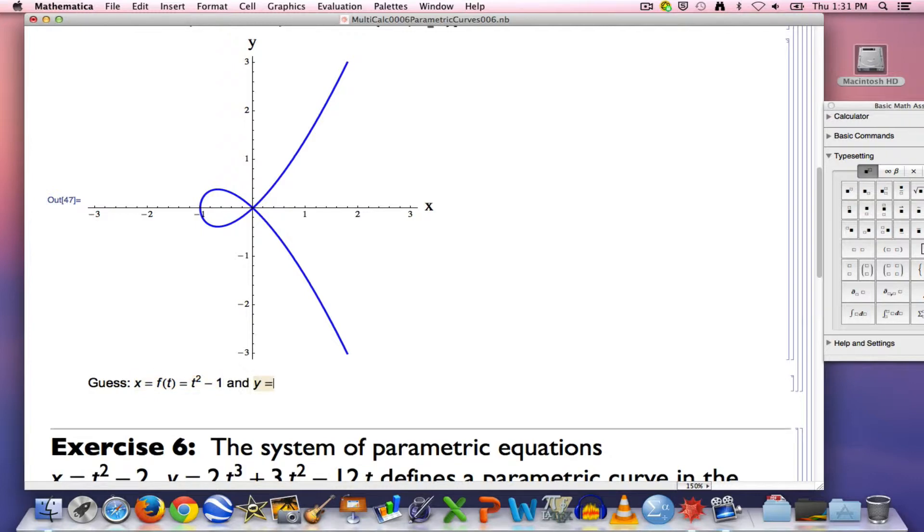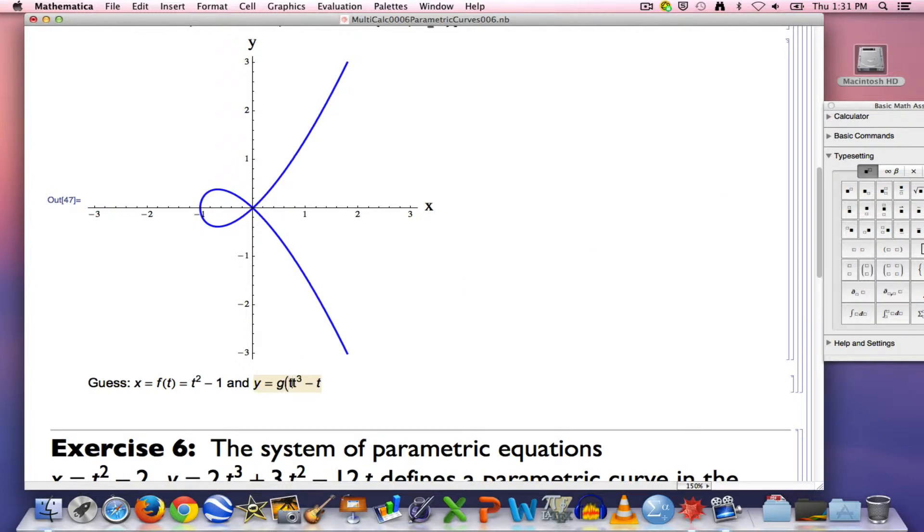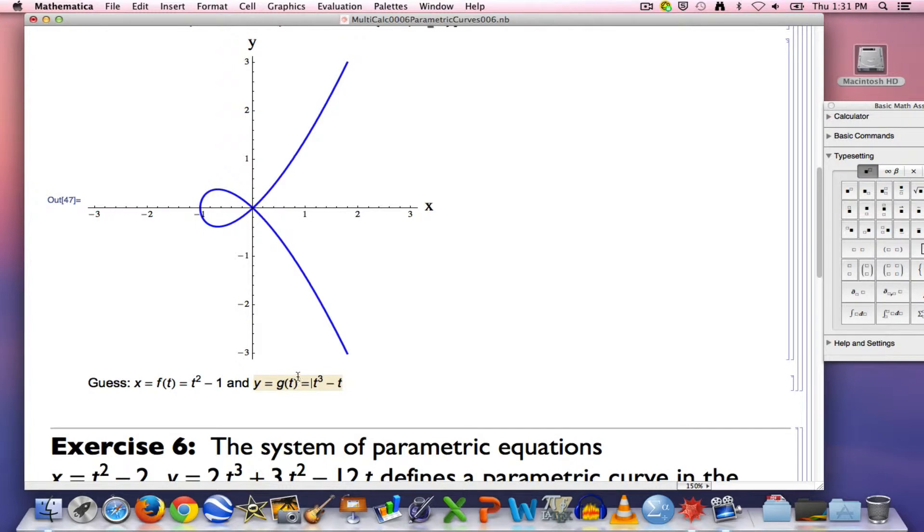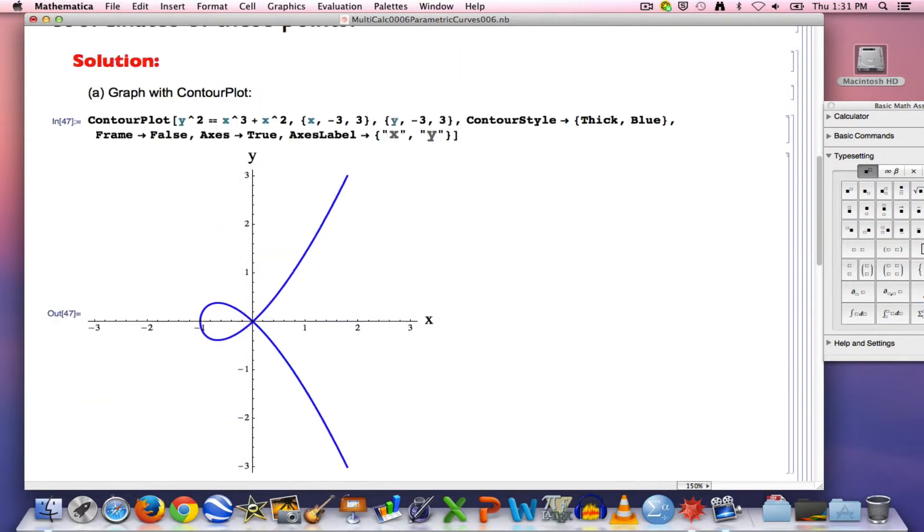What about y? Again, if I follow this kind of motion, starting in the lower right, going up, then around the loop, then back up again, y is going to start out with negative values, increase to positive values, before decreasing back to negative values again, before increasing back to positive values again. t cubed is not good enough. t squared is not good enough. But again, there's no guarantee that it definitely works. We need to now verify, confirm this guess algebraically.